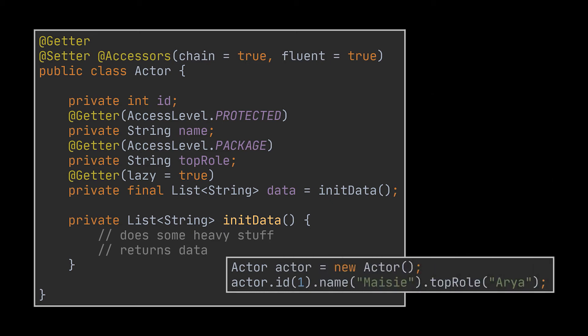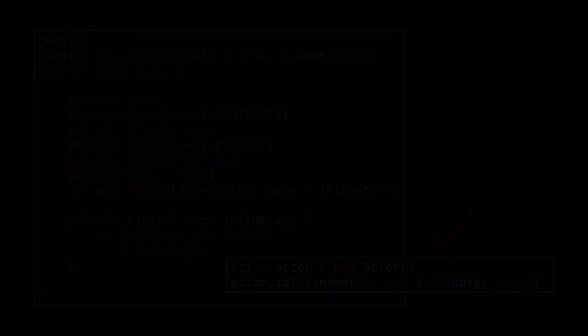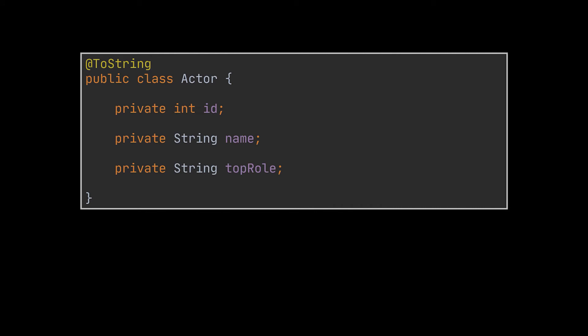Alongside @Getter and @Setter, we can use the @Accessors annotation. This annotation allows you to customize your setters and getters even further. In our example we use it to chain our setter calls one after the other using the chain argument. We also used it to make them fluent, which means that the set prefix will be removed from the setter methods using the fluent argument. So when creating an instance of the actor class, we can chain these calls without the set prefix.